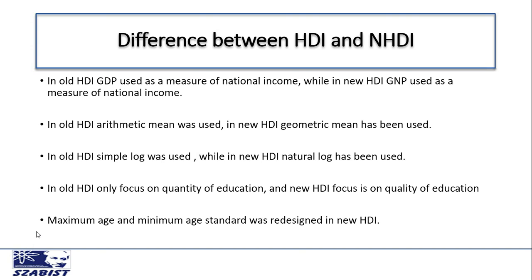The last major difference between the old HDI and new HDI is that the maximum and minimum age standard was redesigned in new HDI. There was criticism in old HDI that every country has their own maximum and minimum age according to their living standards, so in new HDI the maximum and minimum age standard has been changed. These are the five major differences between the old HDI and new HDI.